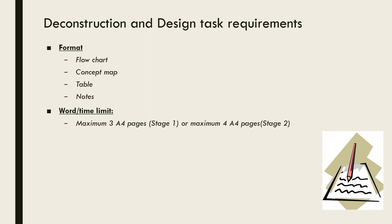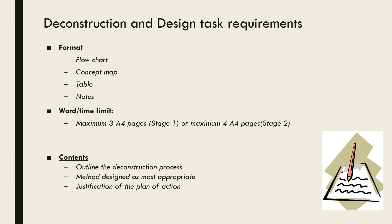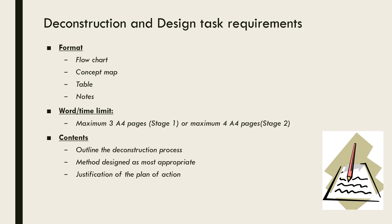We'll begin by quickly going over the task requirements. You have flexibility in terms of how you present your information, restricted to a maximum of four A4 pages in Stage 2 and three A4 pages in Stage 1. The most commonly used formats include flowcharts, mind maps and tables. Make sure your font isn't any smaller than size 10 so that all of your content is legible. Within these pages you need to outline your deconstruction process and justify your choices made, including the factor being investigated, the investigation design type and method to be used, sample and ethical procedures.